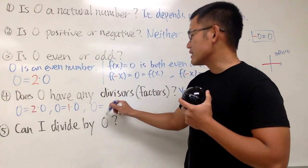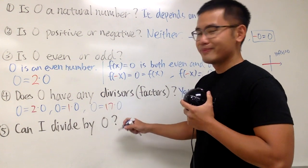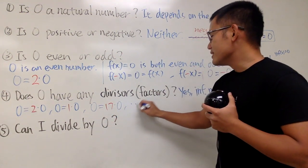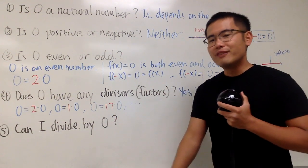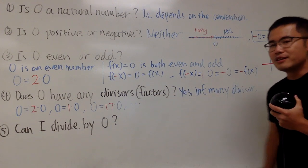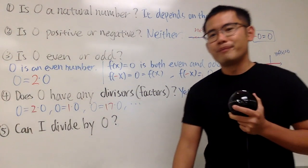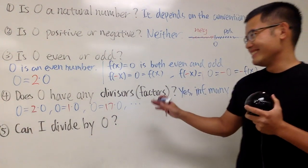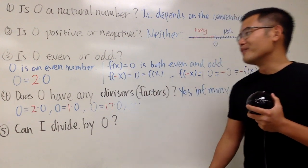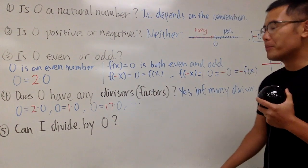And of course, you can write 0 as, let's say, 17 times 0. So 17 is a divisor of 0. So you can see, this right here keeps on going. You have infinitely many divisors. In fact, all the natural numbers are divisors of 0. So that is also pretty cool.